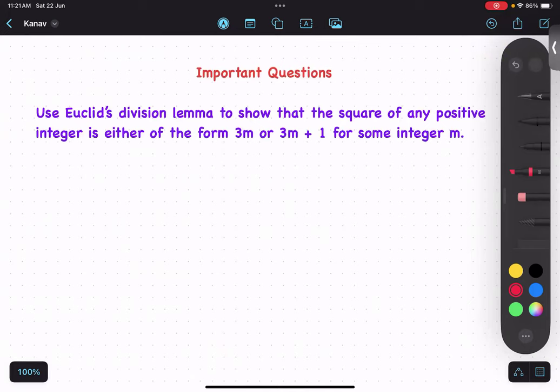Using Euclid's division lemma, show that, use Euclid's division lemma to show that square of any positive integer - can you tell me any positive integer is of the form 3Q, 3Q plus 1, 3Q plus 1.